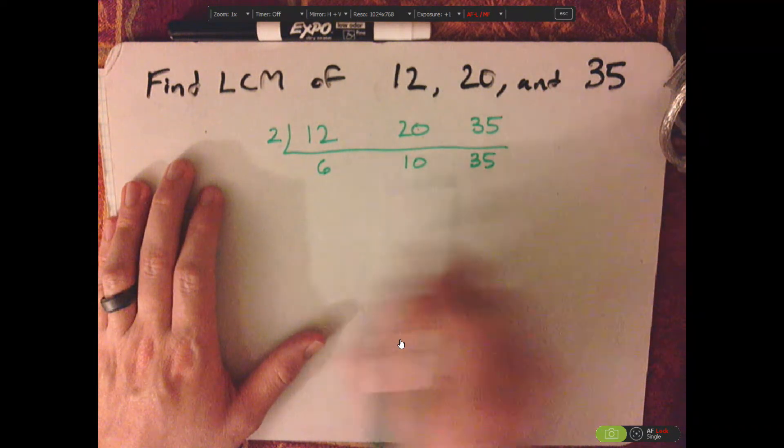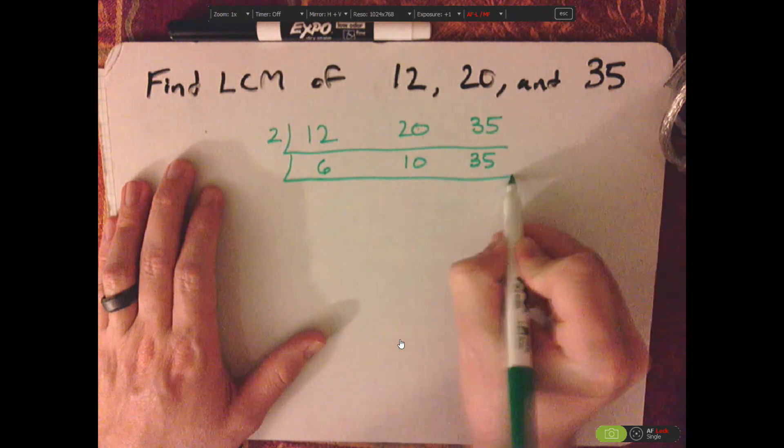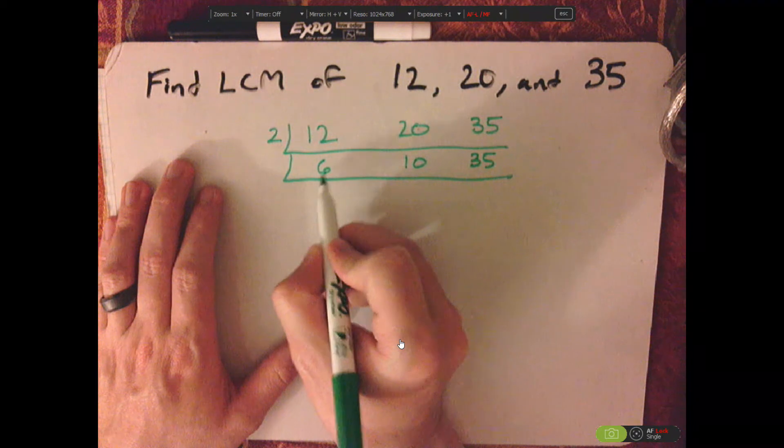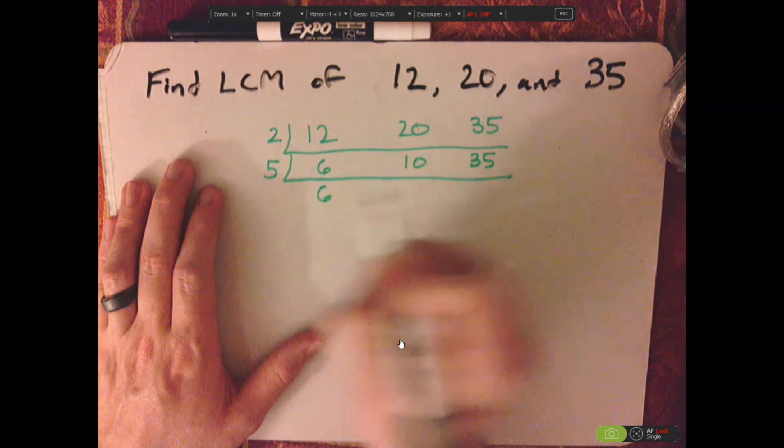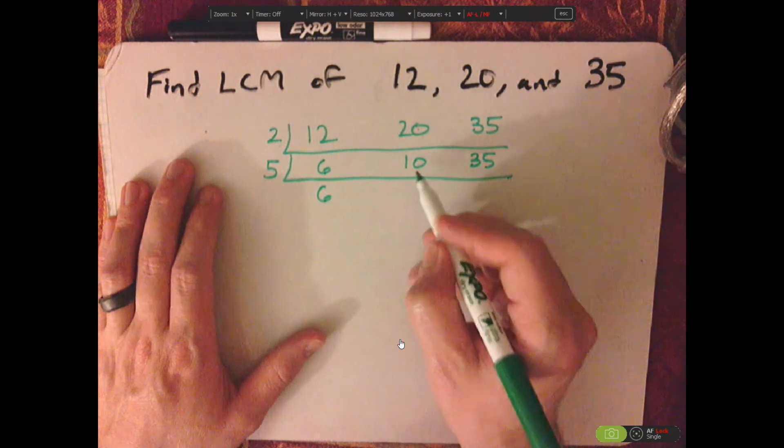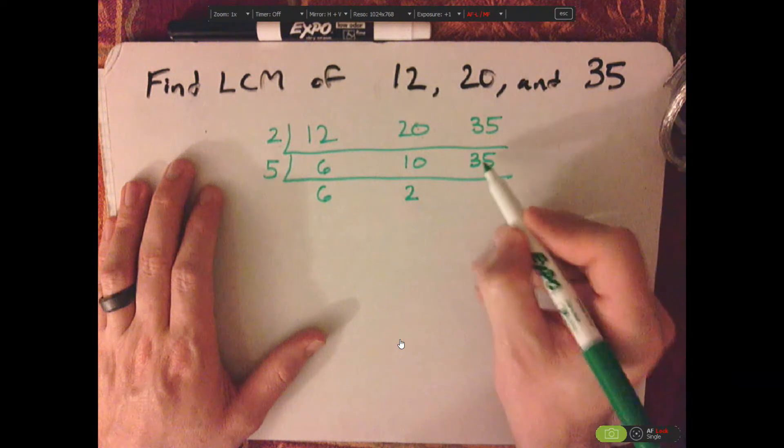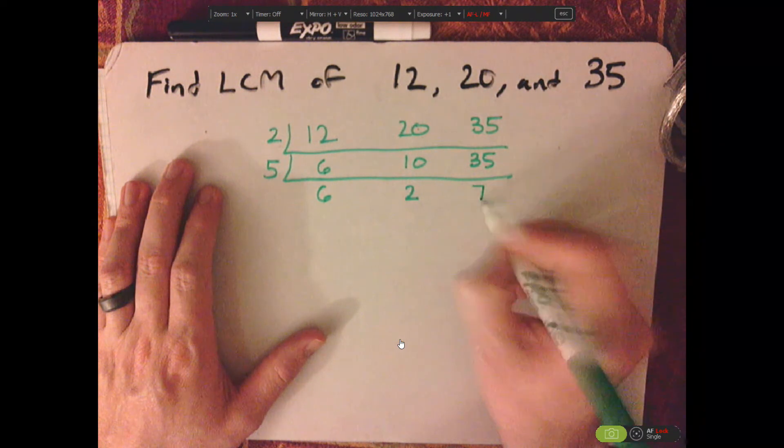Then I can do the same thing with 5. I can divide these by 5. I can see here that's not going to divide by 5, so I can ignore that. Let's keep that as 6. 10 divided by 5 is 2, and then 35 divided by 5 is 7.